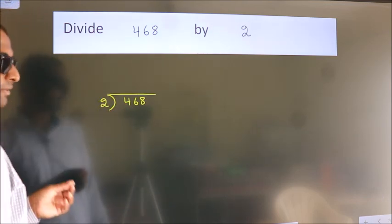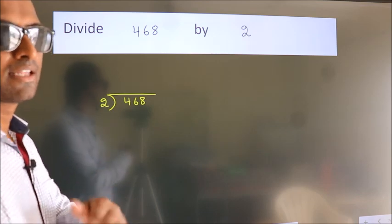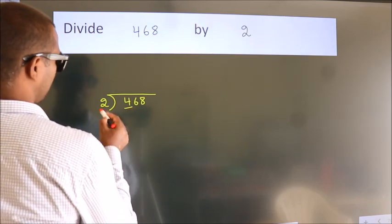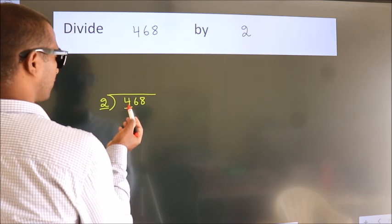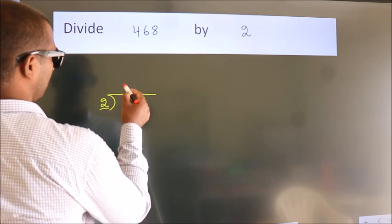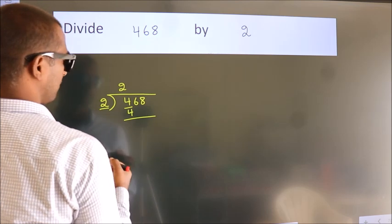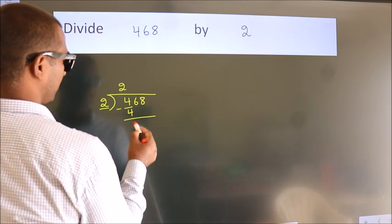This is your step 1. Next, here we have 4. Here 2. When do we get 4? In the 2 table. 2 times 2 is 4. Now we should subtract. We get 0.